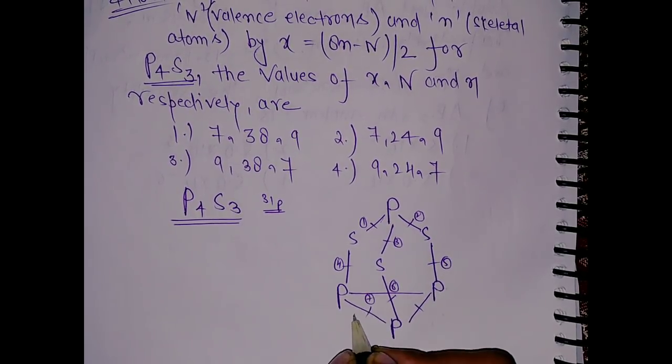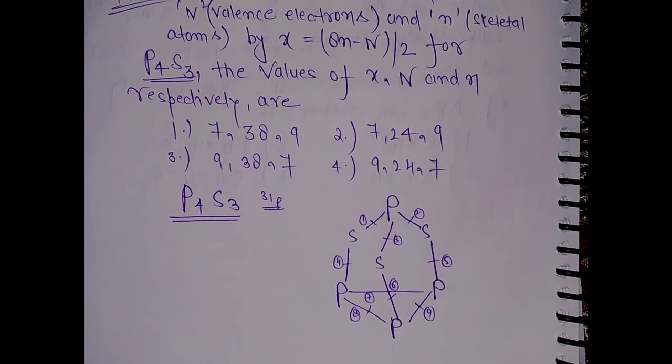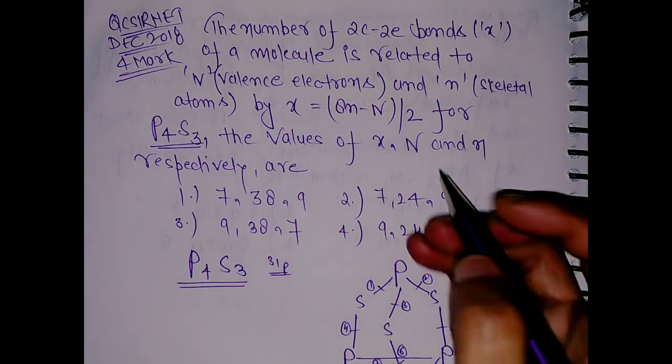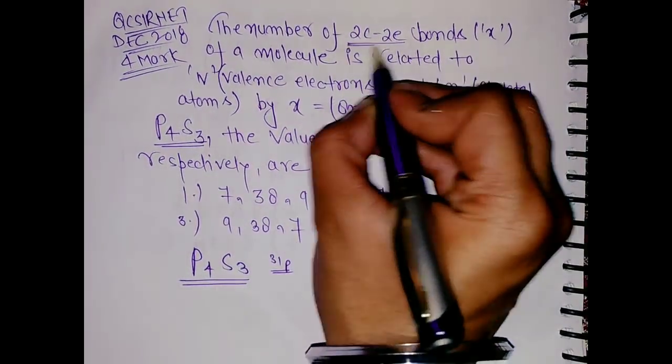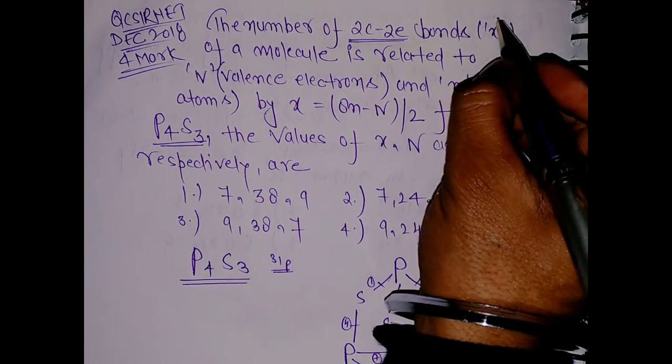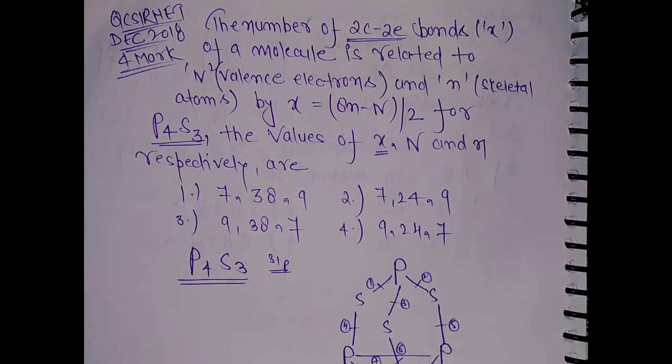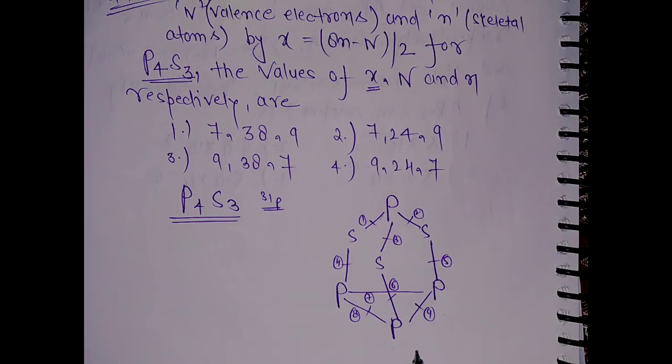So nine sigma bonds are there. That means the number of two-centered two-electron bonds are nine, which has been given by this x value. In the question we have to calculate that x value, which is your two-centered two-electron, which we have calculated as nine.